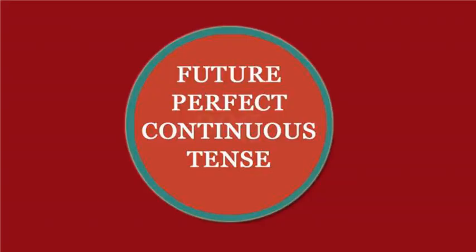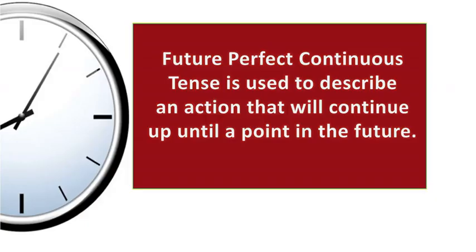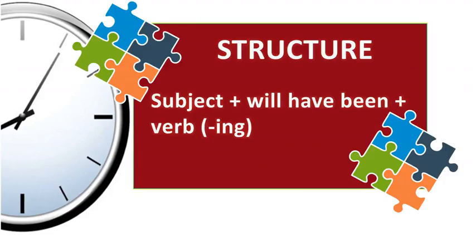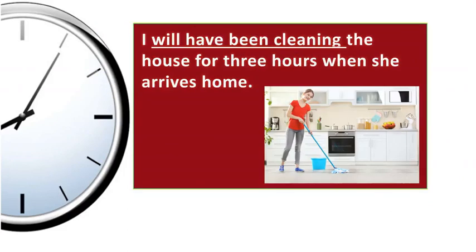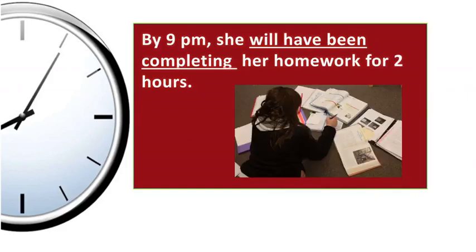Future perfect continuous. This tense is used to describe an action that will continue up until a point in the future. The sentence structure is subject plus will have been plus a verb ending in -ing. For example: I will have been cleaning the house for three hours when she arrives home. By 9 p.m., she will have been completing her homework for two hours.